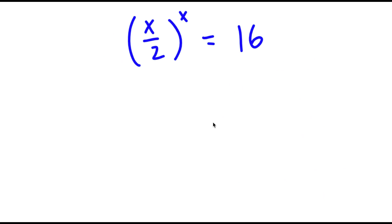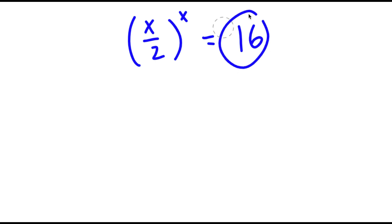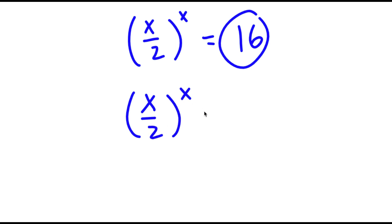In this problem, I have x over 2 to the power of x is equal to 16. To solve this, I'm going to first start by rewriting 16 as 2 to the power of 4. So now I have x over 2 to the power of x is equal to 2 to the power of 4.